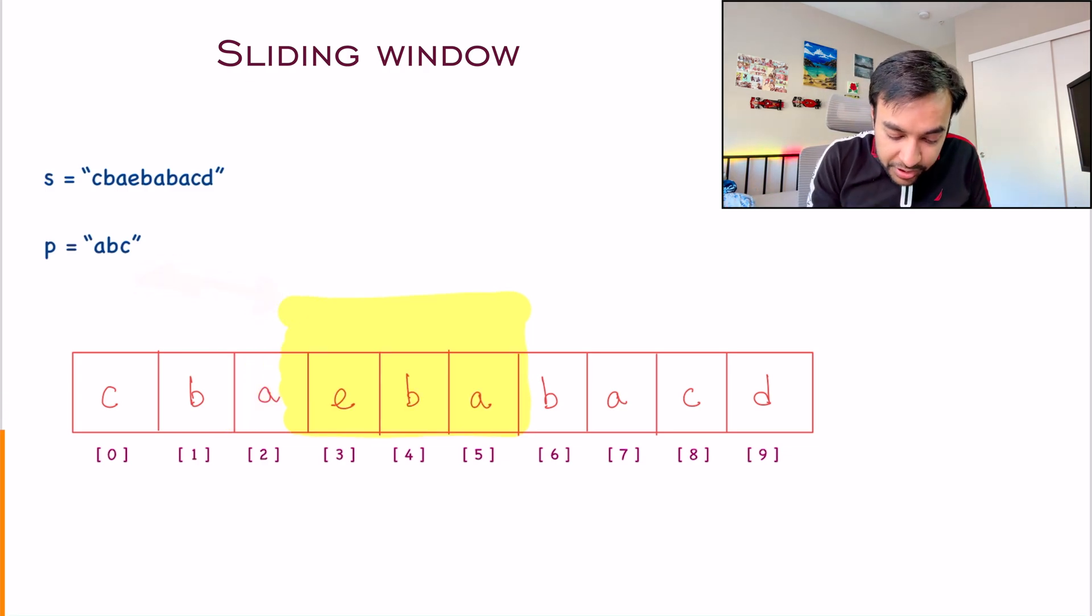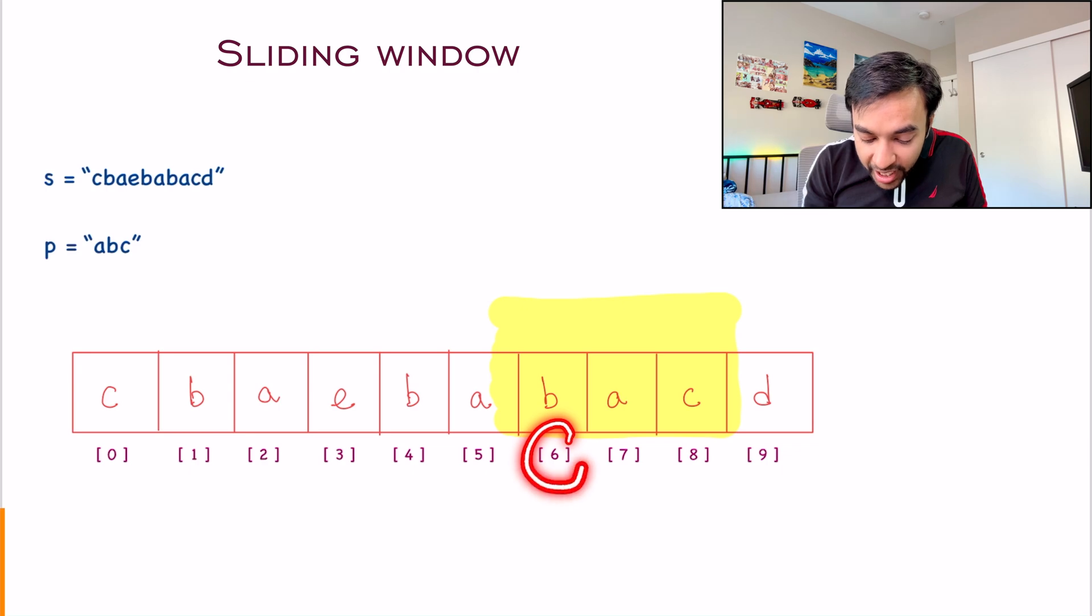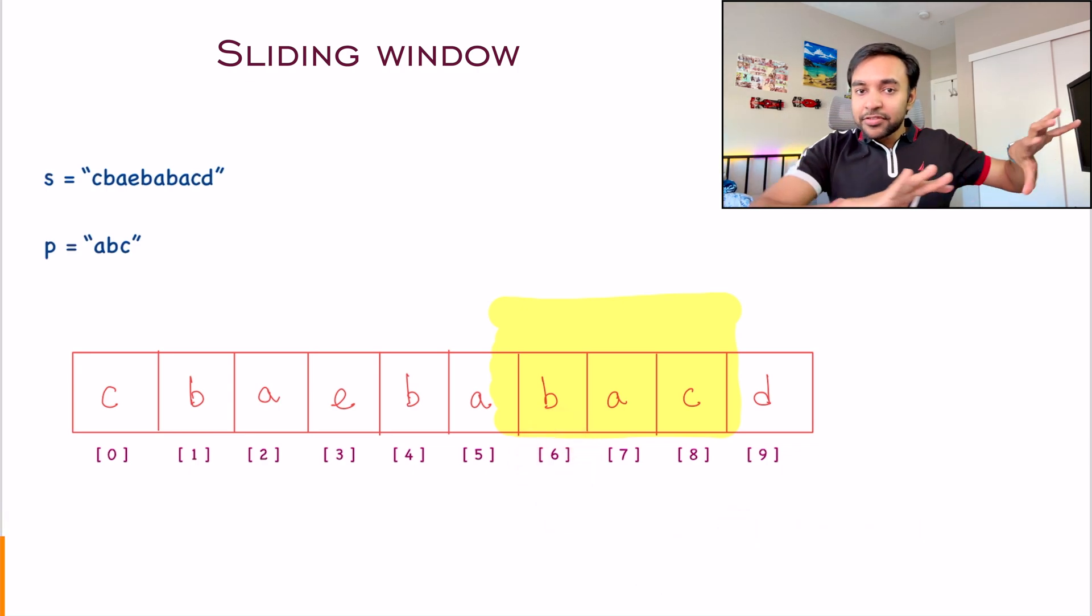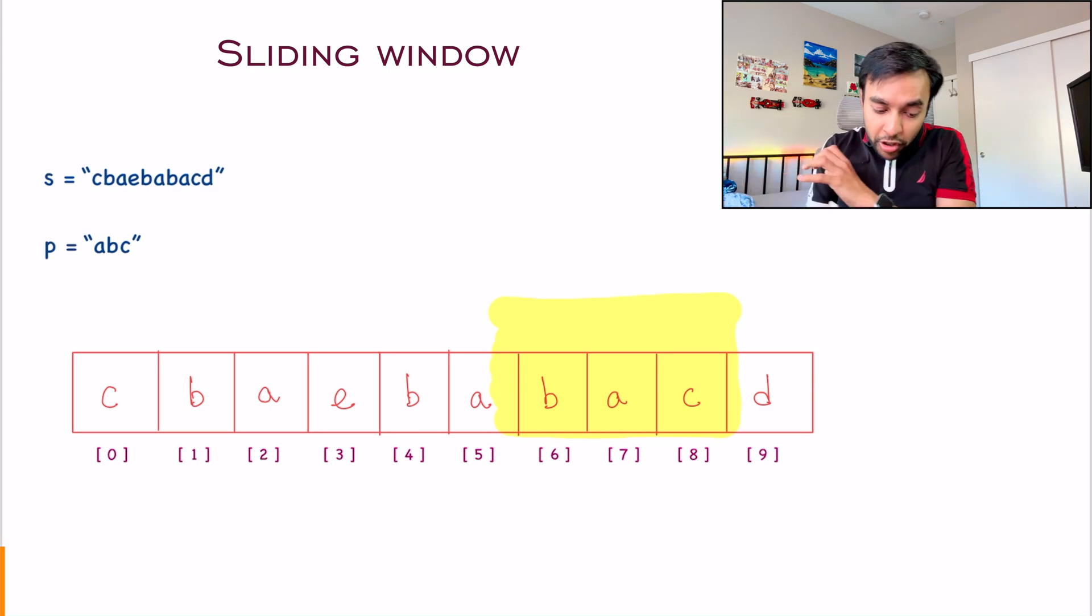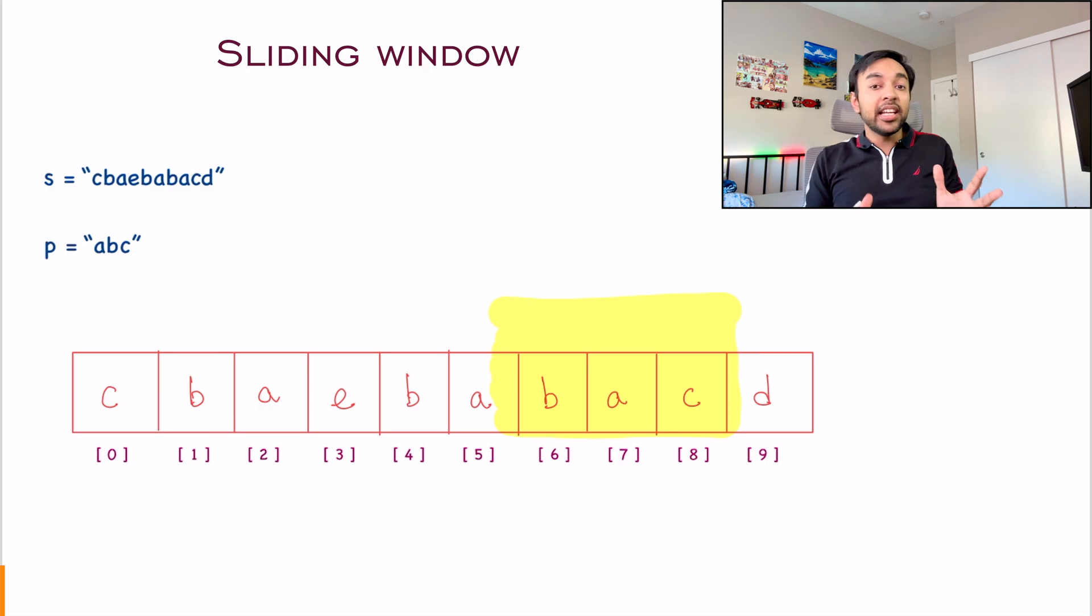You will keep on moving ahead and then eventually you will land at this particular string. What happens now? These two strings are anagrams again. So what do you do? You take up this six and you will add it to your result array. This way you were able to iterate over your entire string only once. And you can determine if you are finding anagrams or not.